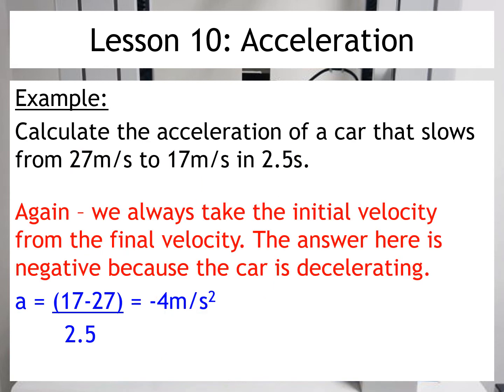Again, what we did here was to take the initial velocity away from the final velocity. So because the initial velocity is 27, I'm taking it away, so it has to go in the second place in the calculation. And because this is the final velocity, this has to go at the start of the calculation. And that's how I end up with this negative number. And because it's negative, this is what tells me that the car is decelerating.